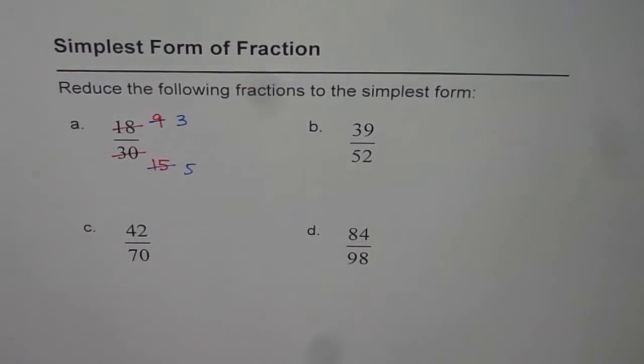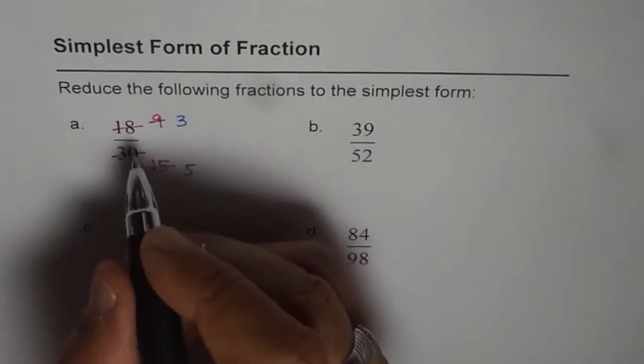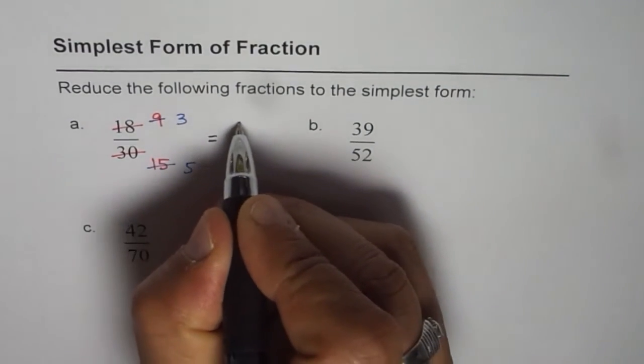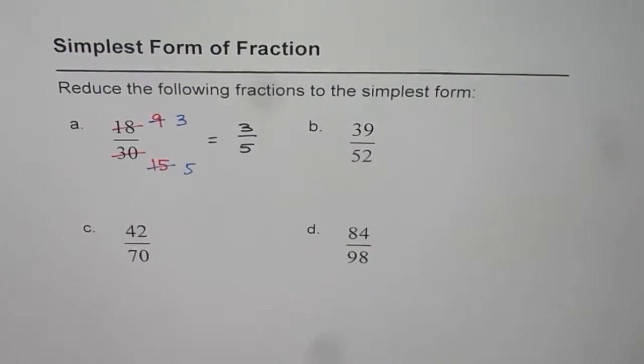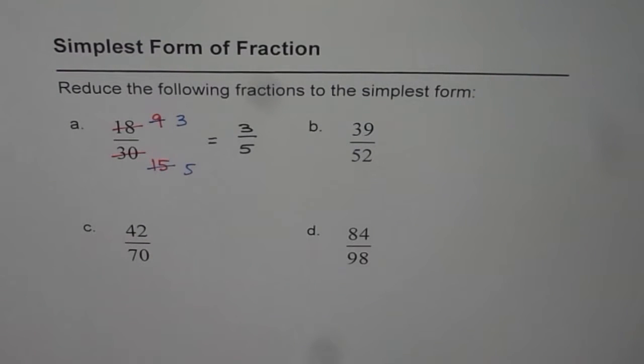Now we can write down our answer as 18 over 30 is equals to 3 over 5. As you know, 3 and 5 do not have any common factor except for 1.